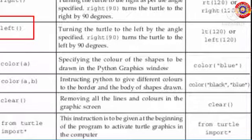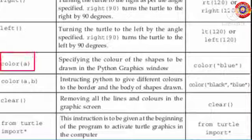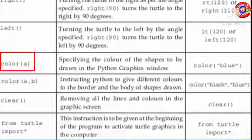The next instruction is 'left' — it turns the turtle to the left by the angle specified. For example, left(90) turns the turtle to the left by 90 degrees. LT is the short form of left.